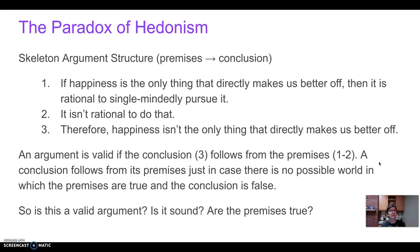That's the first premise — an if-then statement, 'if P then Q.' The second premise has the form of denying the consequent of the conditional in Premise 1. Premise 2 is that it just isn't rational to single-mindedly pursue one's own happiness — it leads to misery. We have to focus on other things, like applying for a job if we want to get one. We have to think about the means to achieving the end; if we focus only on the end itself, we'll never achieve it. So Premise 2 is: it's not rational to single-mindedly pursue happiness.